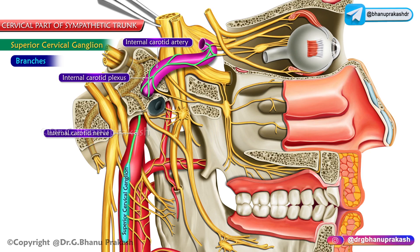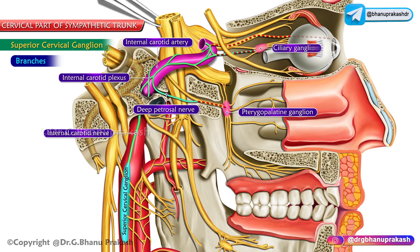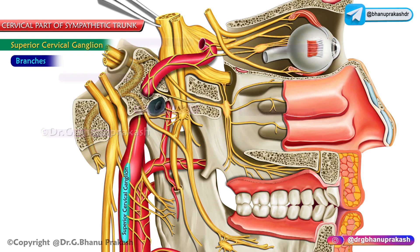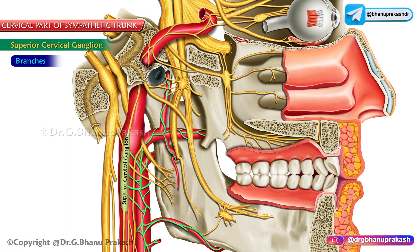The plexus around the internal carotid artery supplies the dilator pupillae. Some of these fibers form the deep petrosal nerve, especially for the pterygopalatine ganglion, while others give fibers to the ciliary ganglion. The external carotid branches form a plexus around the external carotid artery.